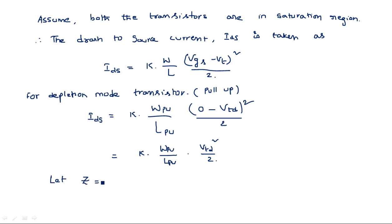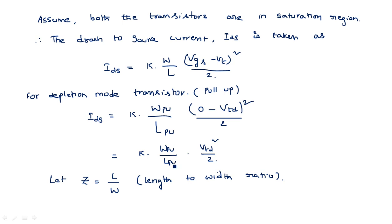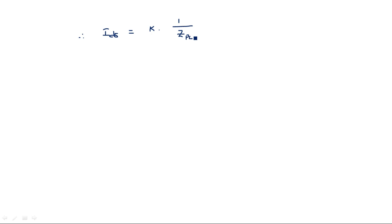Let Z be defined as L/W, the length-to-width ratio of a transistor. So WPU/LPU is rewritten as 1/ZPU, where ZPU belongs to the pull-up transistor. Therefore the IDS for the depletion mode transistor becomes: IDS = K × (1/ZPU) × VTD² / 2. This is the first equation.